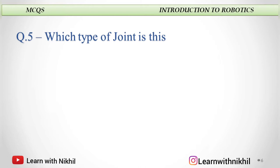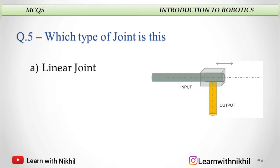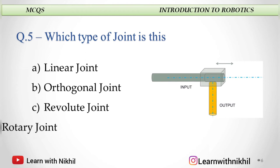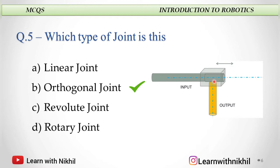Which type of joint is this? You have to see the image. A. Linear joint, B. Orthogonal joint, C. Revolute joint, or D. Rotary joint. The answer is orthogonal joint. In an orthogonal joint, the input axis and the output axis are perpendicular to each other.